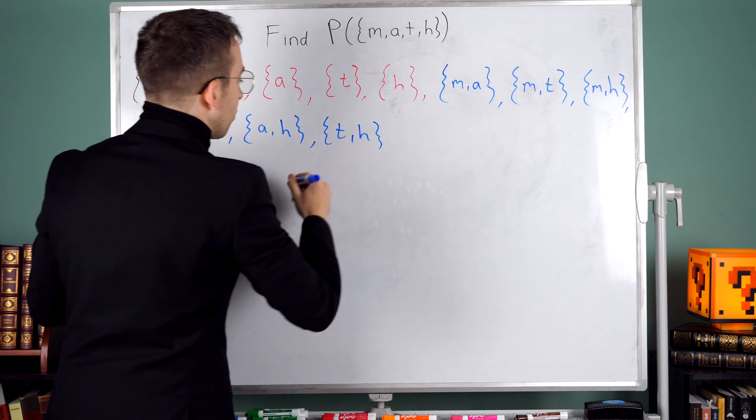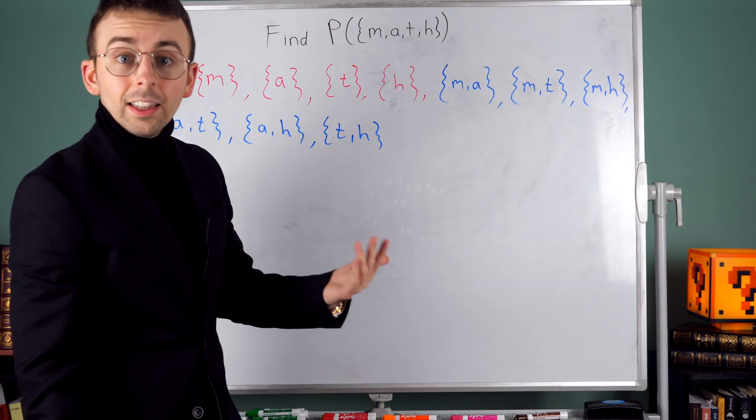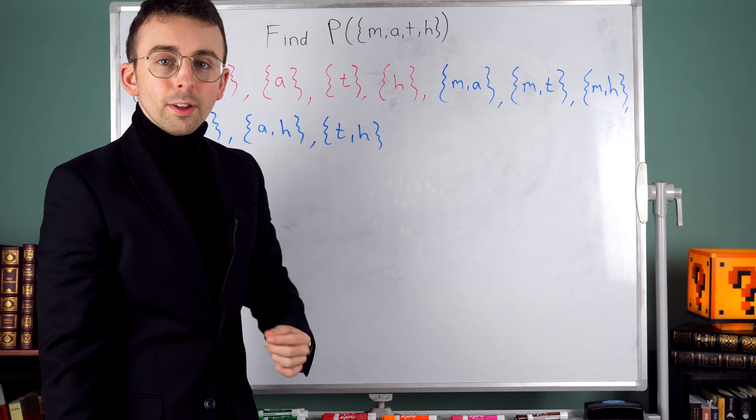And then the last subset with two elements is the one containing t and h. Remember, subsets are just sets whose elements all belong to the original set.